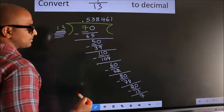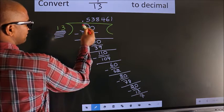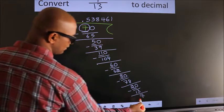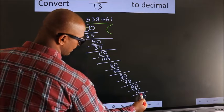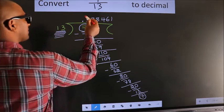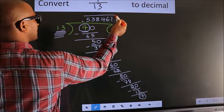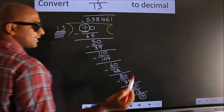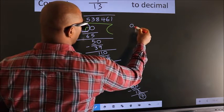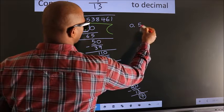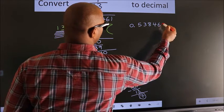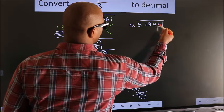Now, here you observe — we had 7 here, and we got 7 again. That means we get a bar on these numbers. Therefore, our answer is 0.538461 with a bar on these numbers. This is our answer.